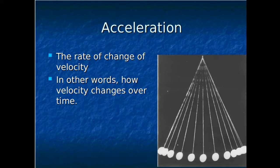The speed might remain constant while the object turns, or the direction might remain constant while the object changes speeds. Formally, acceleration is the change in velocity, or really how quickly the velocity changes. So acceleration is delta v — how much the velocity changes — divided by delta t, how much time it takes. That tells you how quickly the velocity changes.